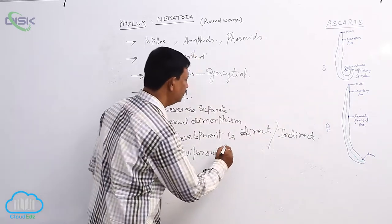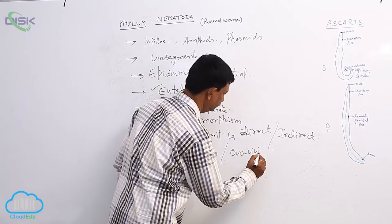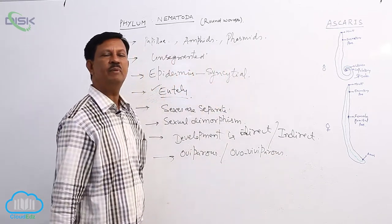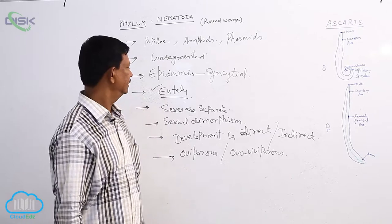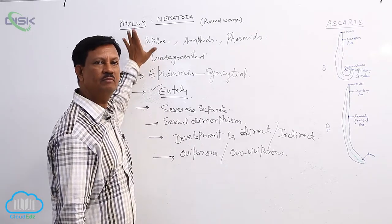Here some are oviparous, which are the oviparous animals. These are the main general characters of the phylum Nematoda. Once again we have to discuss some important characters.